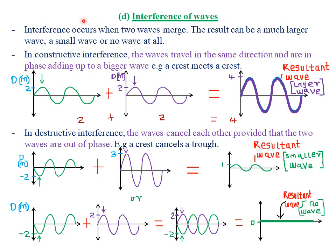Interference of waves occurs when two waves merge — that is, add up or combine. The result can either be a much larger wave, a smaller wave, or no wave at all. We have two types of interference: constructive interference and destructive interference.